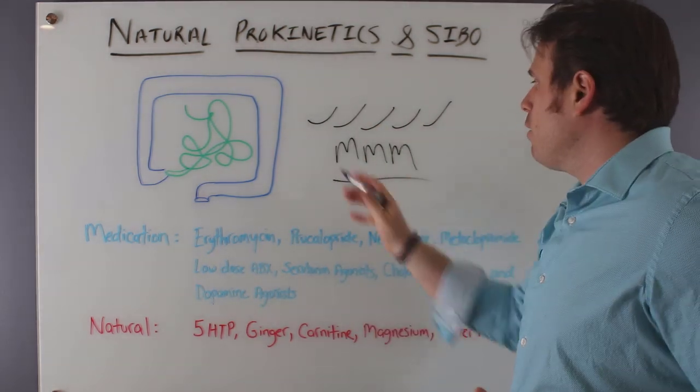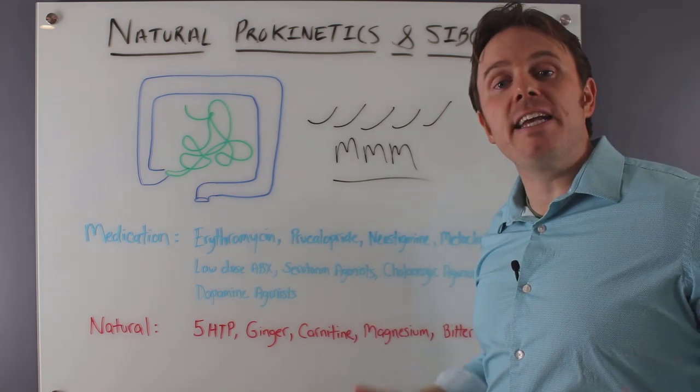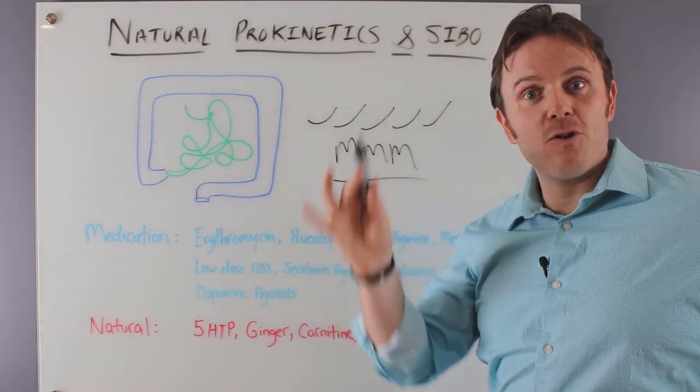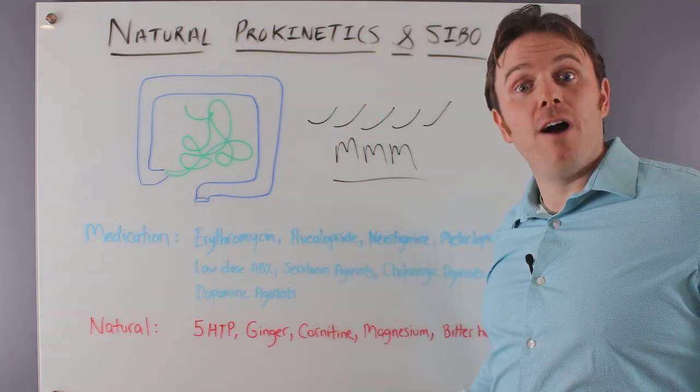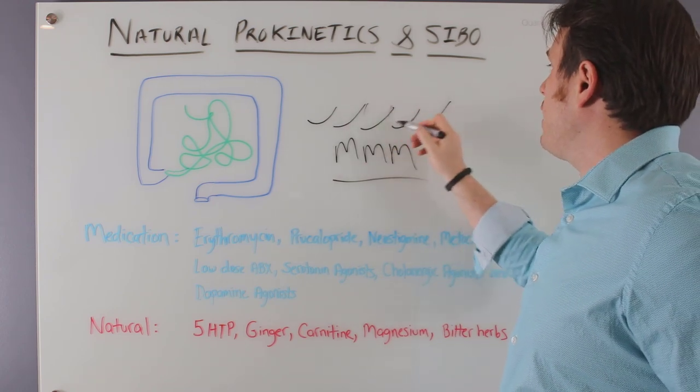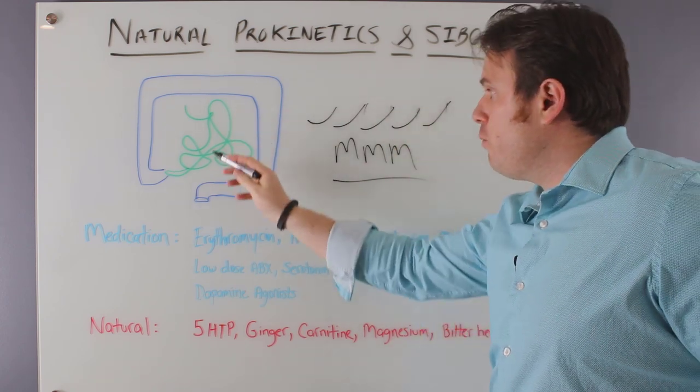And part of what stimulates that is the vagus nerve. So vagus is Latin for wandering. It's the nerve that wanders all the way from the brain stem all the way down throughout the intestinal tract. So very powerful. It stimulates these natural wave-like contractions that help move food through the intestinal tract.